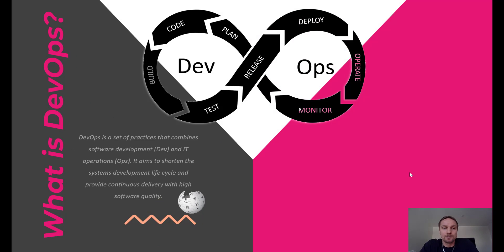So what is DevOps? According to Wikipedia, DevOps is a set of practices that combines software development and IT operations. It aims to shorten the system's development lifecycle and provide continuous delivery with high software quality. At the top of the slide here, you can see the traditional DevOps process with all the phases in it, and it's an iterative process that repeats over and over again during the lifespan of the app.